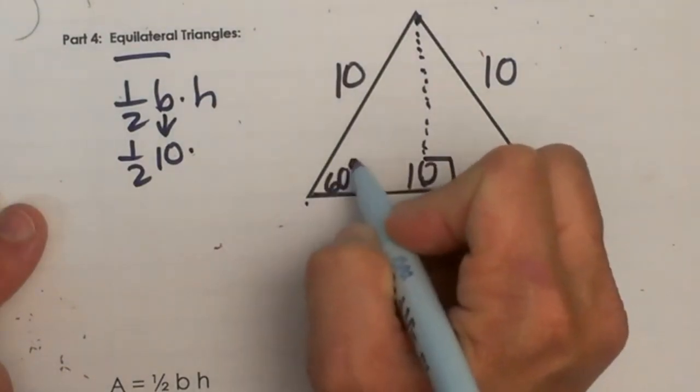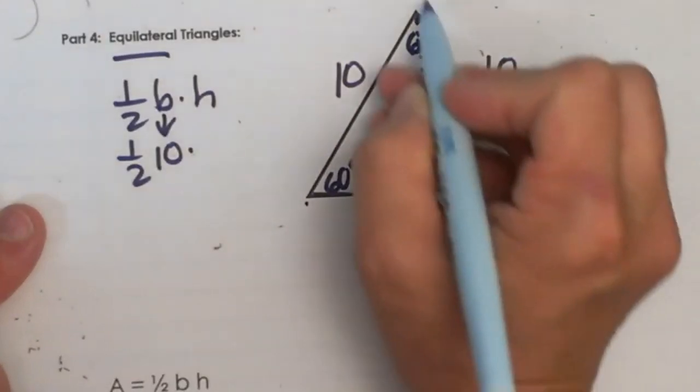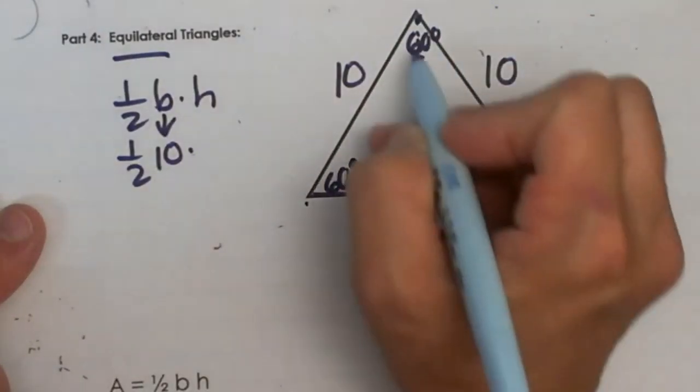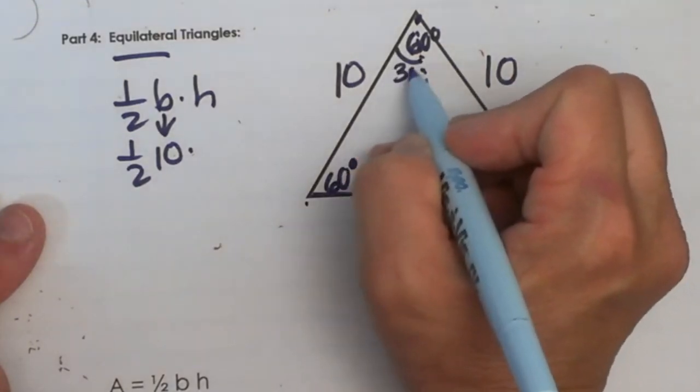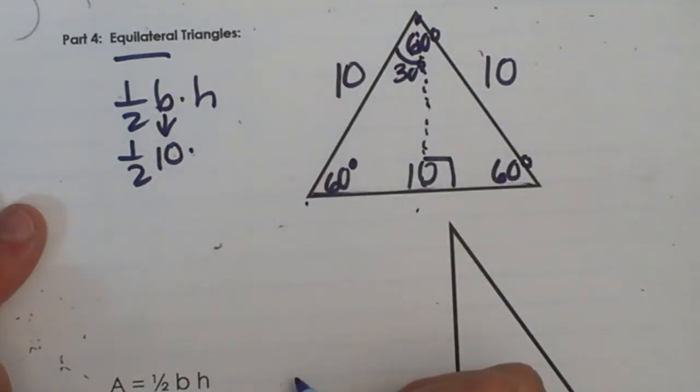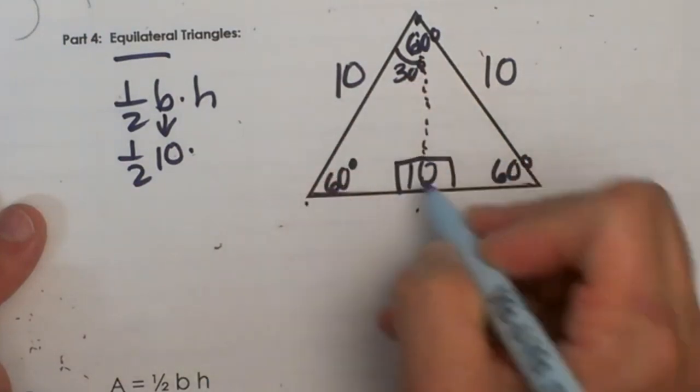We know in an equilateral triangle all three angles measure 60 degrees. When I draw this altitude in, it breaks this 60 degree angle in half and makes it 30. Now you might recognize it. We have a 30, 60, 90 right triangle.